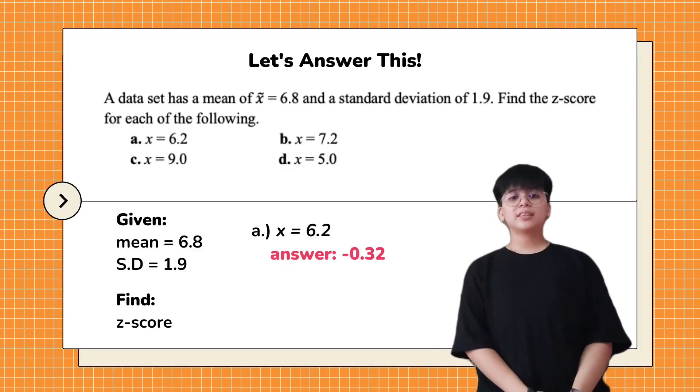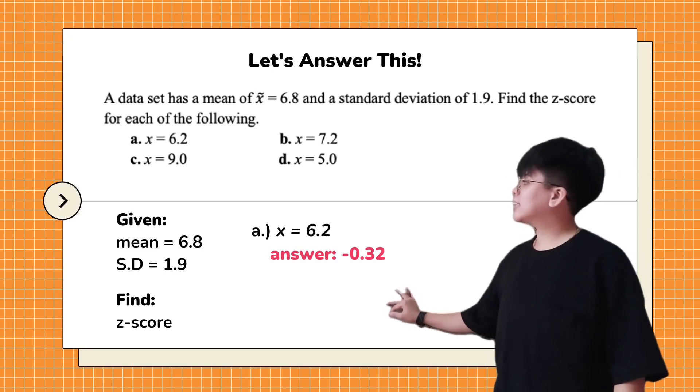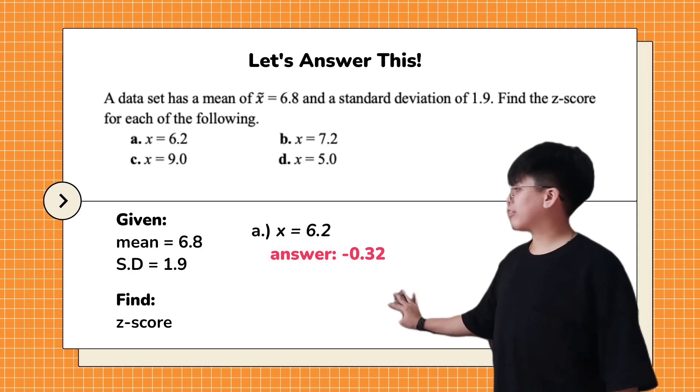Let us try to answer this question. A data set has a mean of 6.8 and a standard deviation of 1.9. Find the z-score for each of the following.